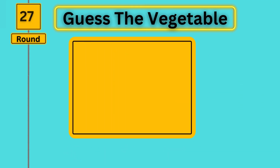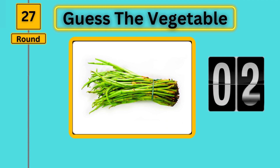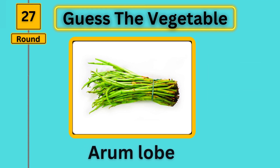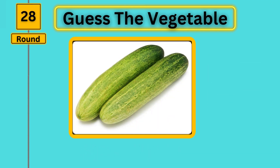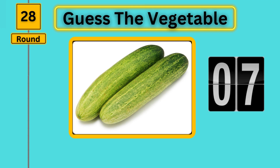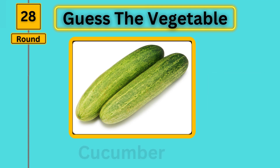Round 27, guess the vegetable. Arum bloom. Round 28, guess the vegetable. Cucumber.